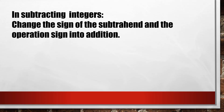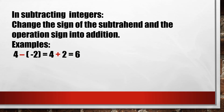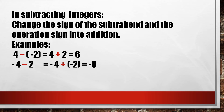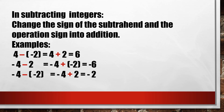In subtracting integers, change the sign of the subtrahend and the operation sign into addition. Examples: 4 − (−2) = 4 + 2 = 6, because negative 2 becomes positive 2 and the minus sign becomes plus. Next, −4 − 2 = −4 + (−2): positive 2 becomes negative 2 and minus becomes plus; both negative, so add and copy negative sign — answer is negative 6. Last, −4 − (−2) = −4 + 2: unlike signs, subtract — 4 − 2 = 2, copy sign of greater absolute value which is negative, so the answer is negative 2.